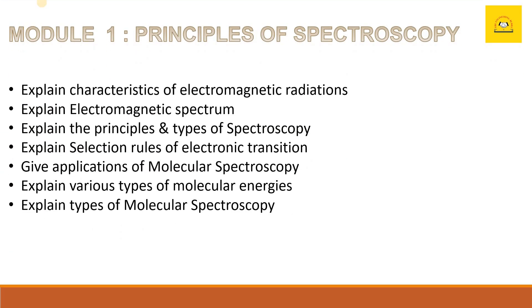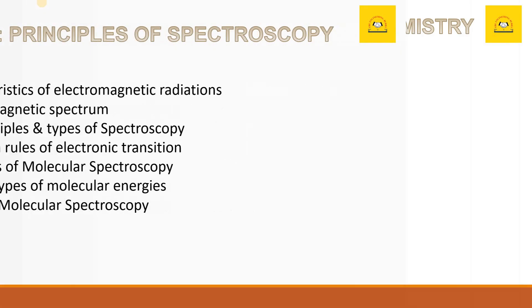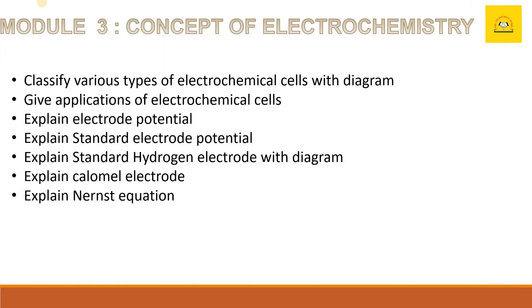The first chapter is Principles of Spectroscopy. The main questions from this chapter are: explain the characteristics of electromagnetic radiations, electromagnetic spectrum, selection rules, various applications for molecular spectroscopy, and the various types of molecular spectroscopy.